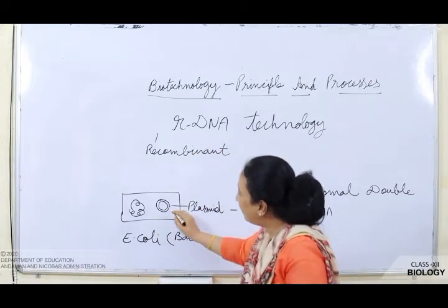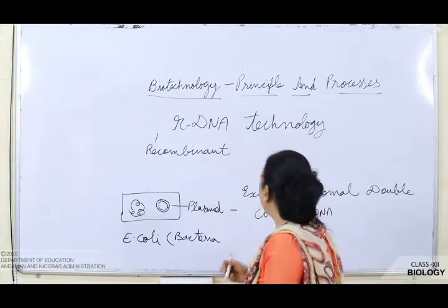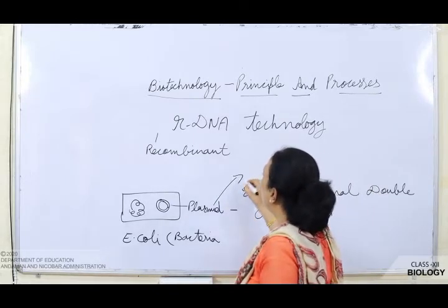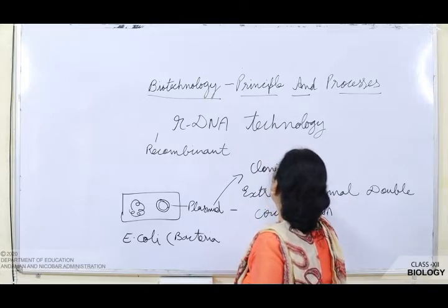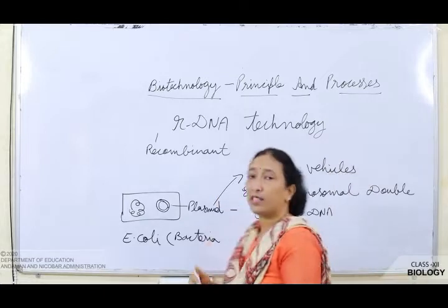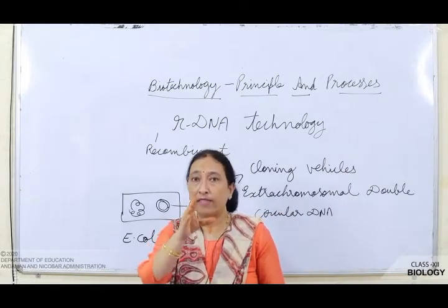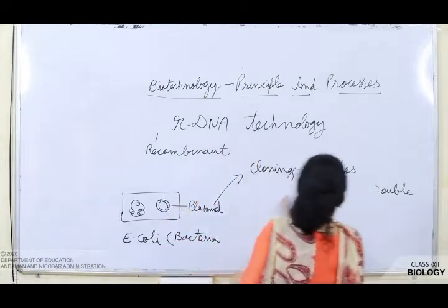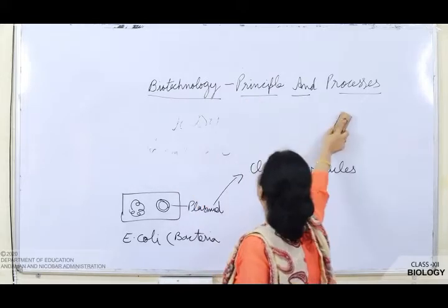We need this extra-chromosomal DNA, that is the plasmid. Plasmids are also known as cloning vehicles. So what is the use of plasmid? We will see — they are known as cloning vehicles.